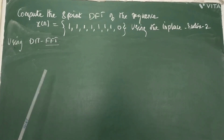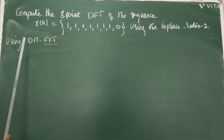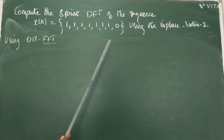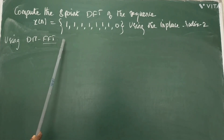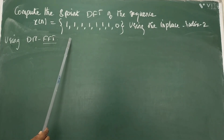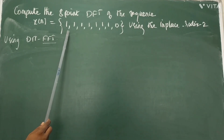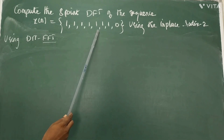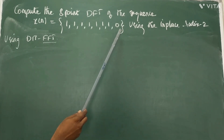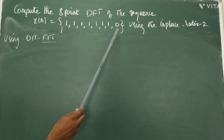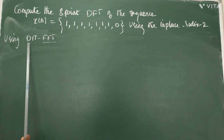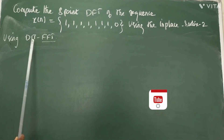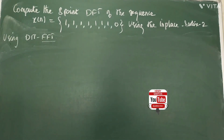Good morning students. Today we are going to see how to compute the 8-point DFT for a given sequence x[n] = {1, 1, 1, 1, 1, 1, 1, 0} using the DIT FFT algorithm.